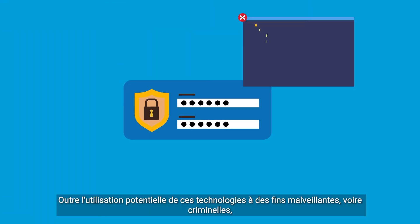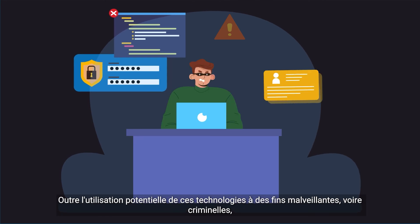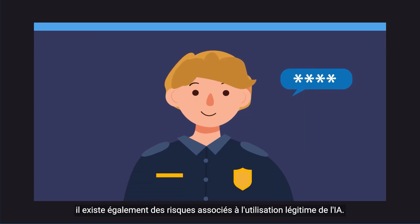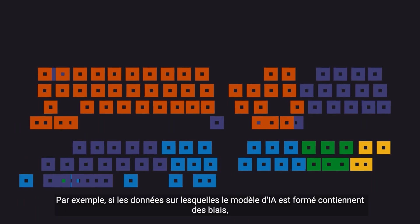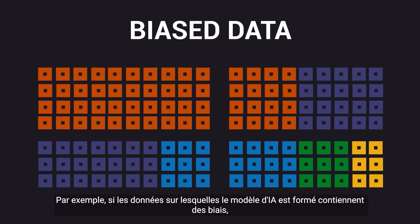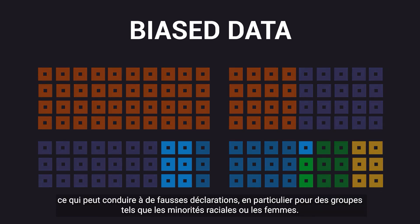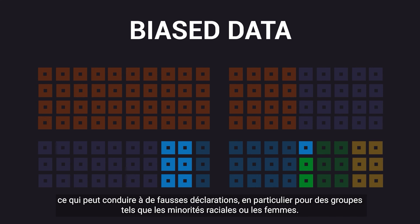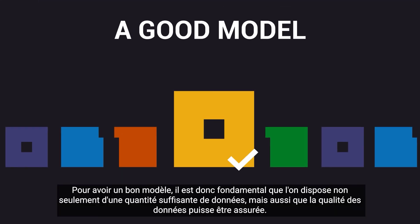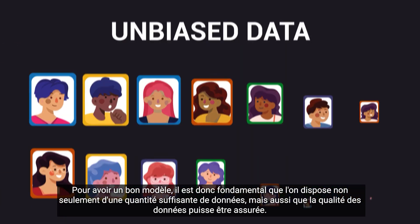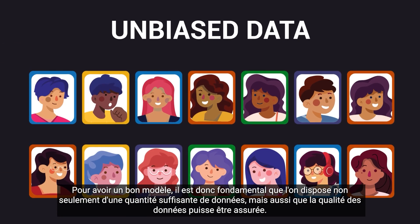Besides the potential use of such technology for malicious or even criminal purposes, there are also risks associated with the legitimate use of AI. For example, if the data on which the AI model is trained contains biases, the model will amplify that bias, which can lead to misrepresentation, especially for groups such as racial minorities or women. To have a good model, it is therefore fundamental that one has not only a sufficient quantity of data, but also that the quality of data can be ensured.